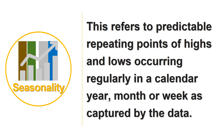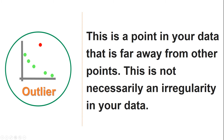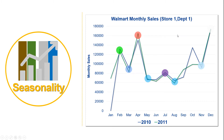The next peculiarity is seasonality. Seasonality refers to predictable repeating points of highs and lows occurring regularly in a calendar year, month, or week as captured by the data. Here is the same Walmart monthly sales chart. The circles annotate the months where seasonality in the data was observed. Seasonality is often due to periods of festivity and annual sales cycles. The chart shows that sales are high and seasonal for the months of April and December, which is expected as those are Easter and Christmas months.